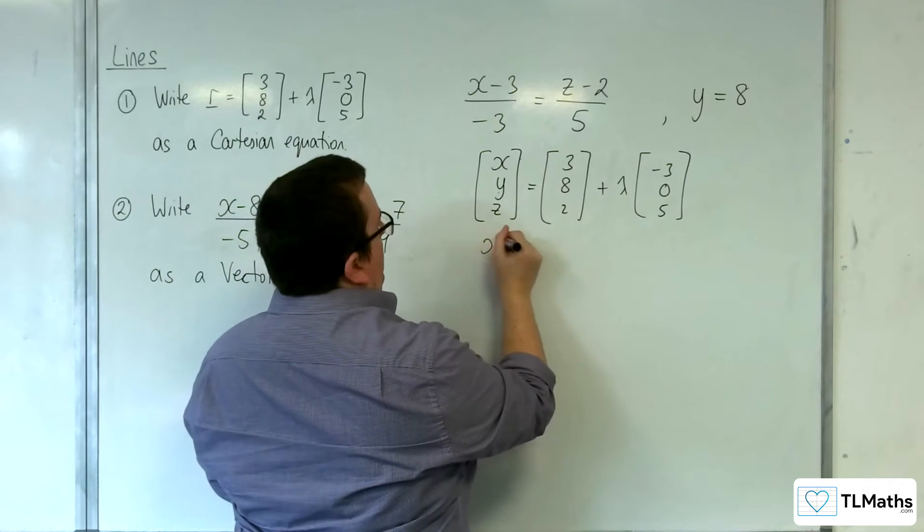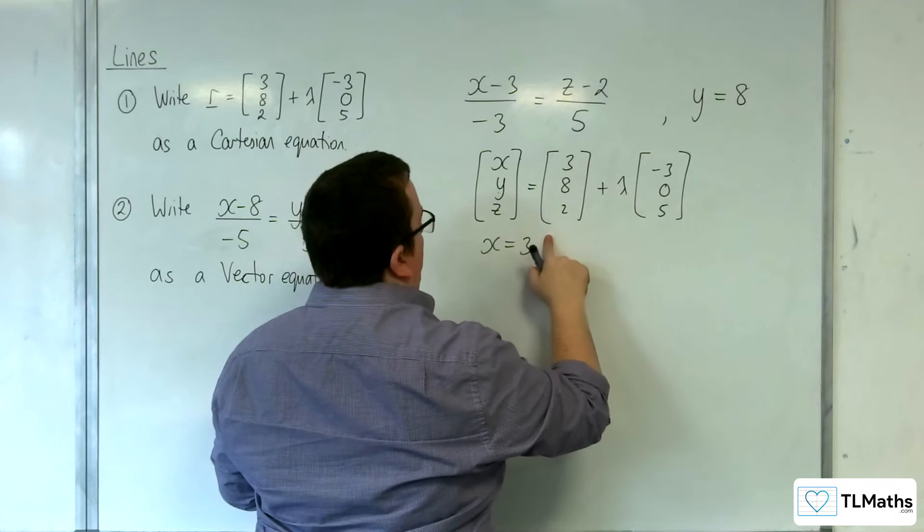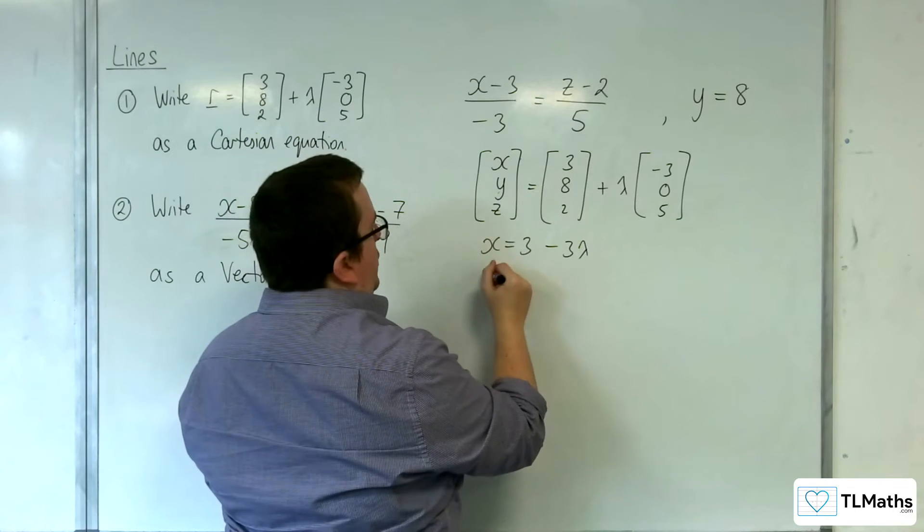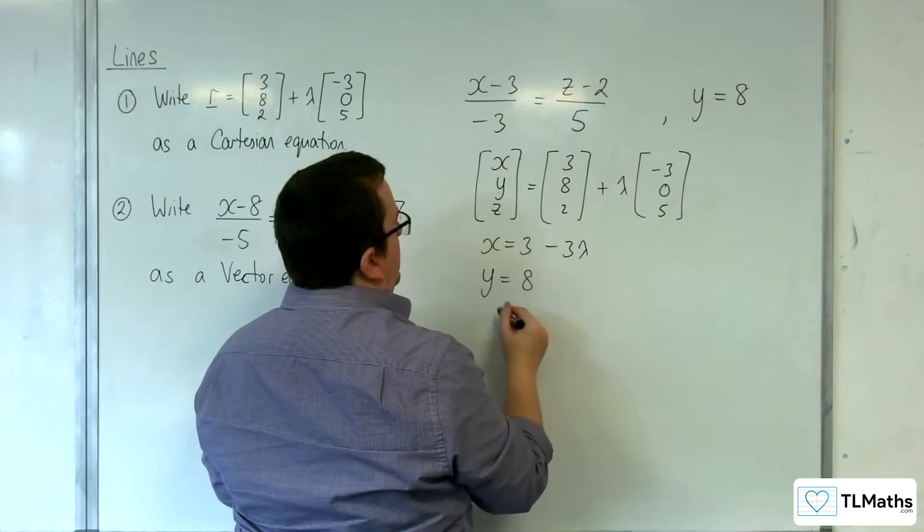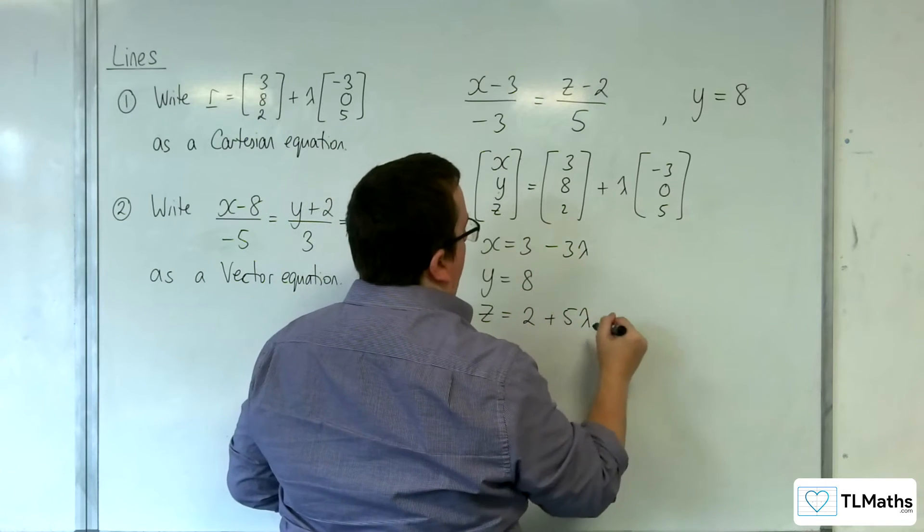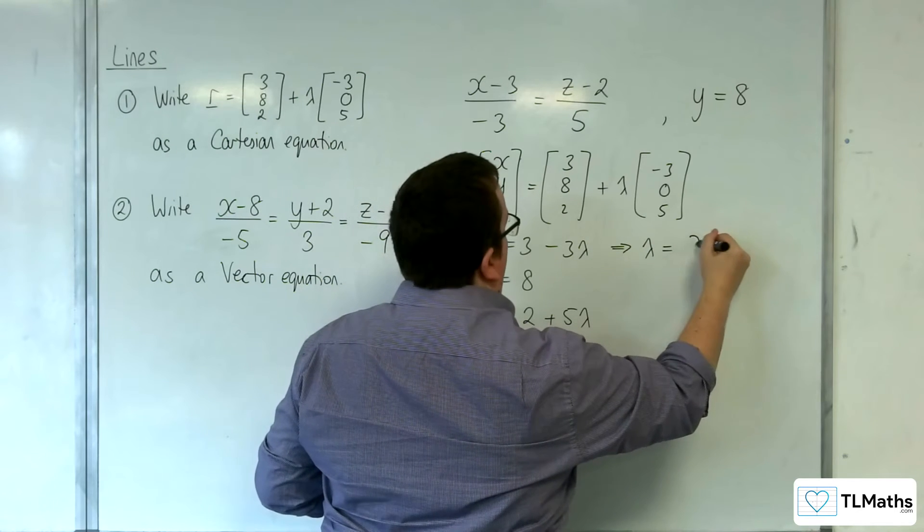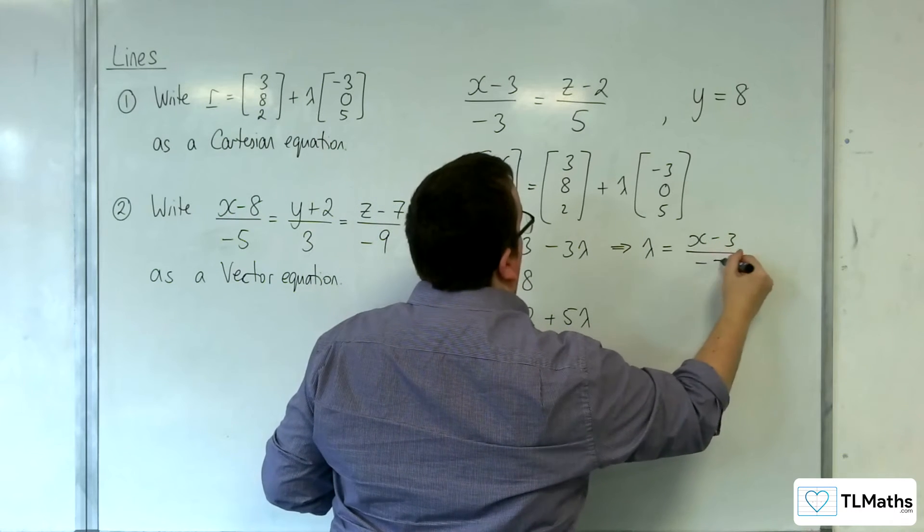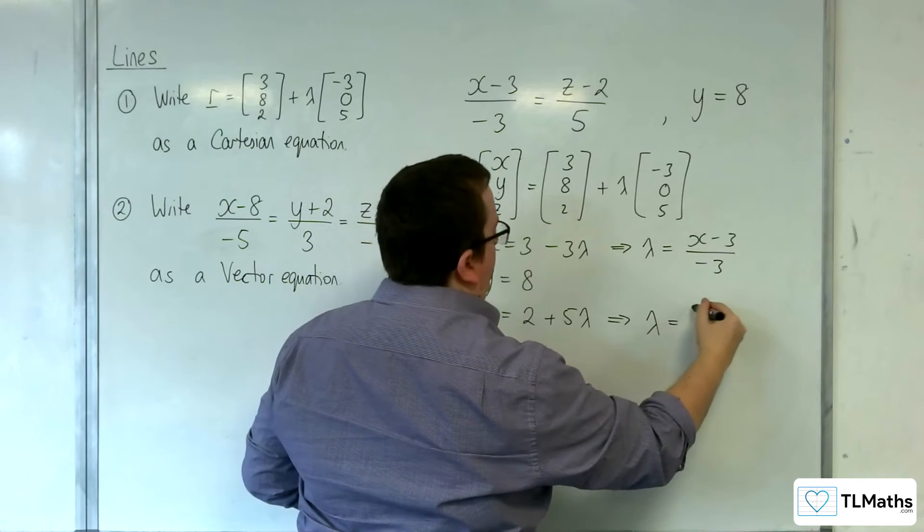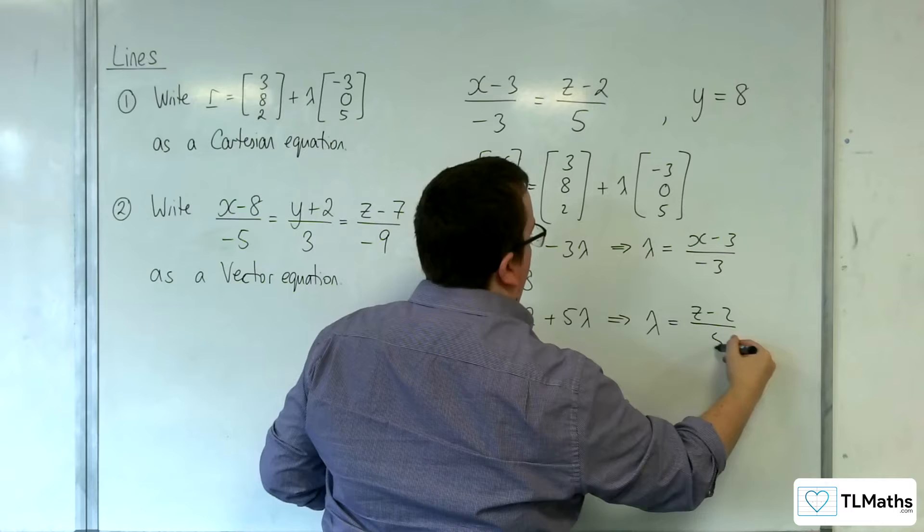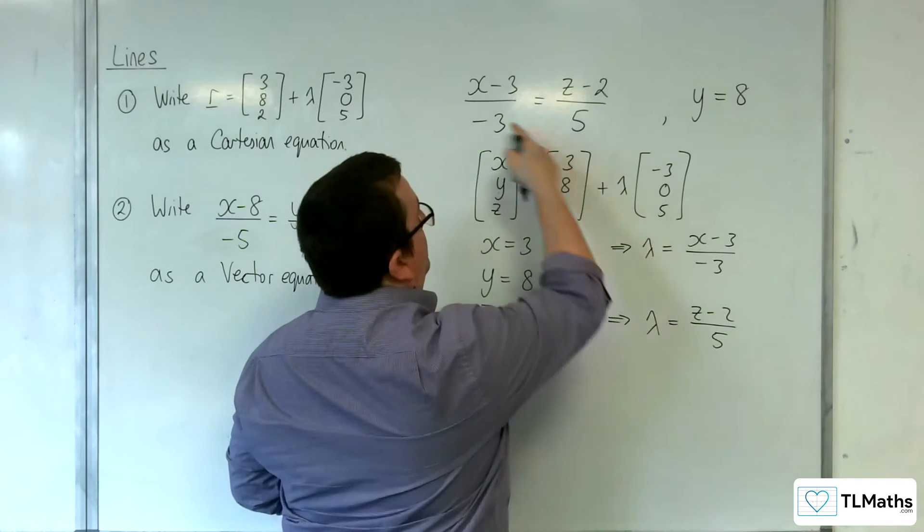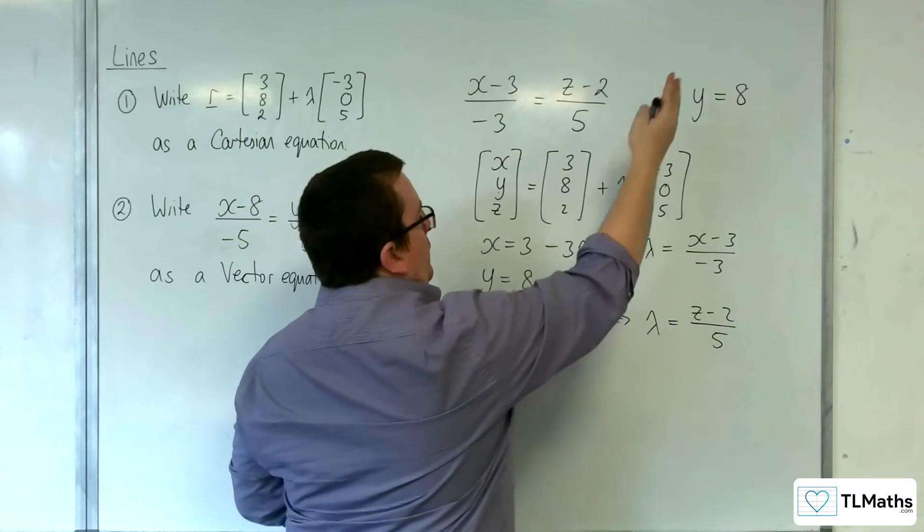And then you could write x is equal to 3 take away 3 lambda, so the top row. Then you've got the middle row which is y is equal to 8. And then you've got the bottom row z is equal to 2 plus 5 lambda. You've rearranged this one to get lambda equals, which is x take away 3 over minus 3. And this one, get lambda is equal to z take away 2 over 5. So those two are equal to one another, so they're both lambda. And you've got the y equals 8 on the side.